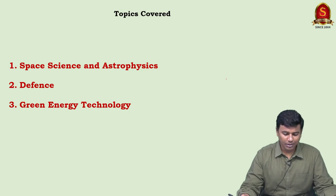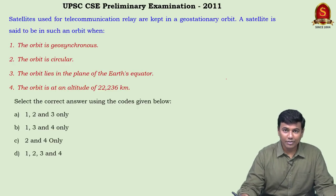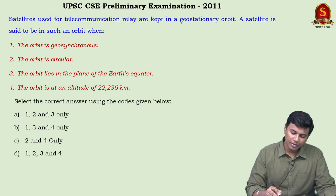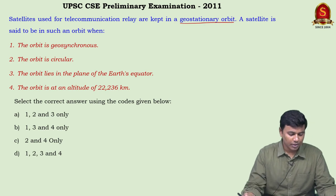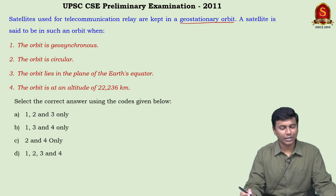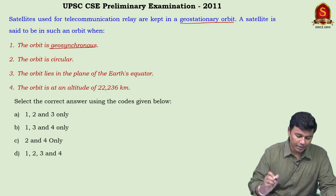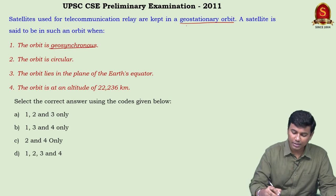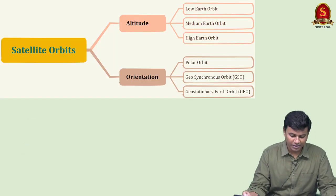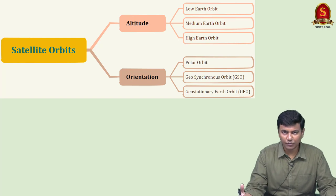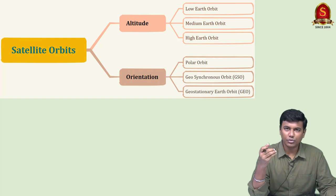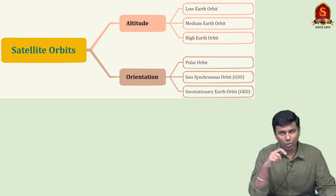Today we start with question number one from the 2011 preliminary examination. Satellites used for telecommunication relay are kept in geostationary orbit. A satellite is said to be in such an orbit when — they have given four characteristics. The first one is that the satellite is geosynchronous. First we have to understand geosynchronous and then geostationary. To understand this we have to talk about classification of satellites based on two factors: altitude and orientation.